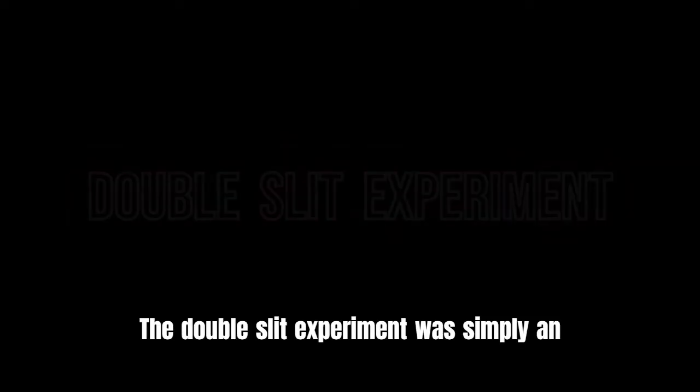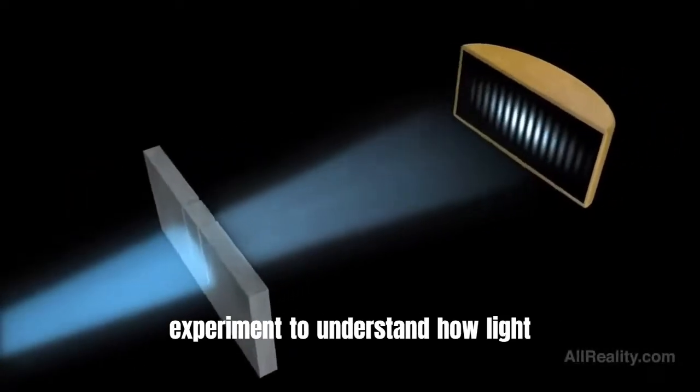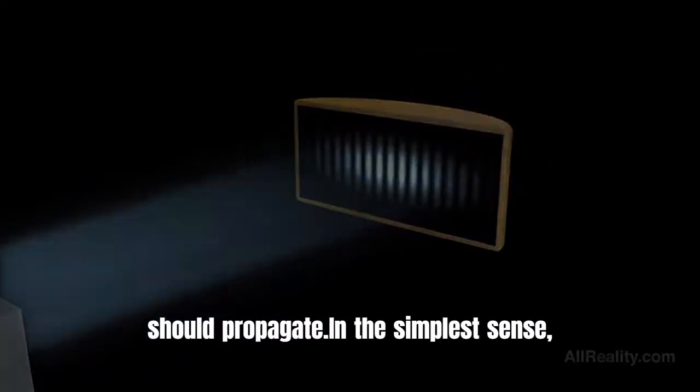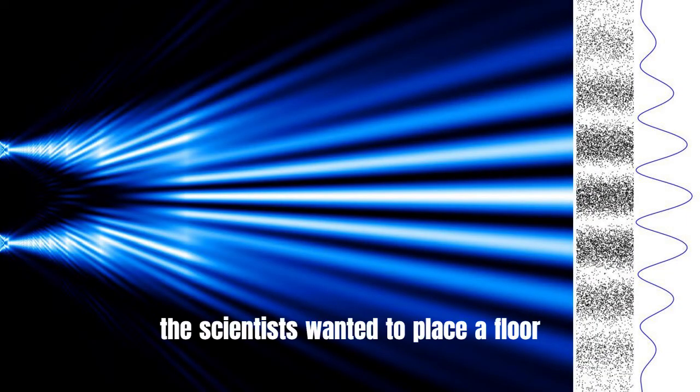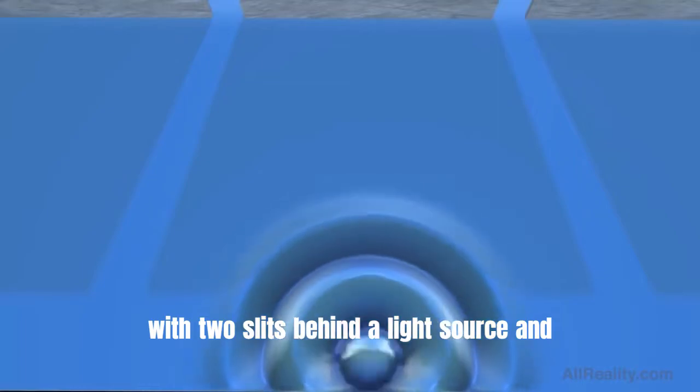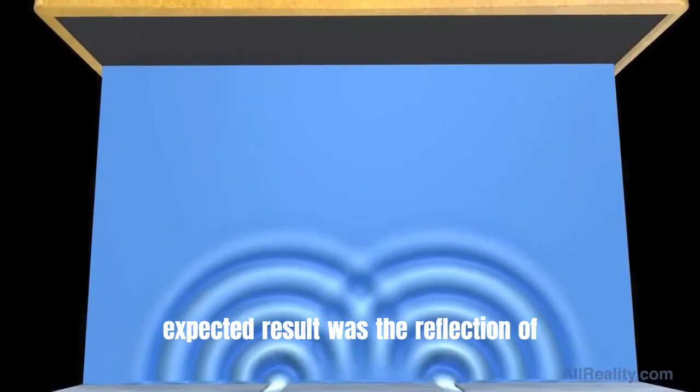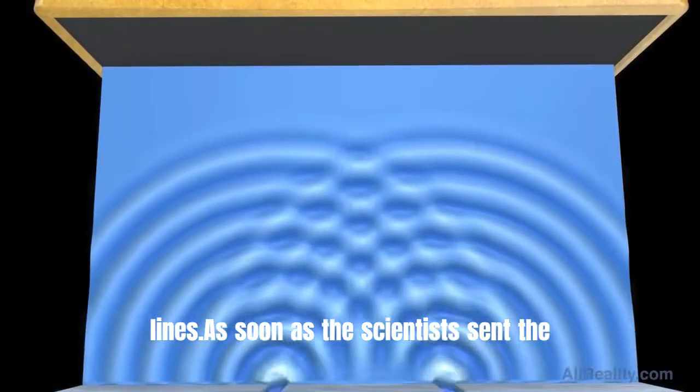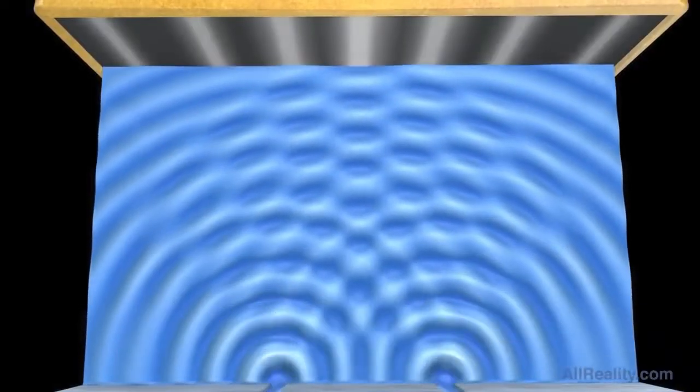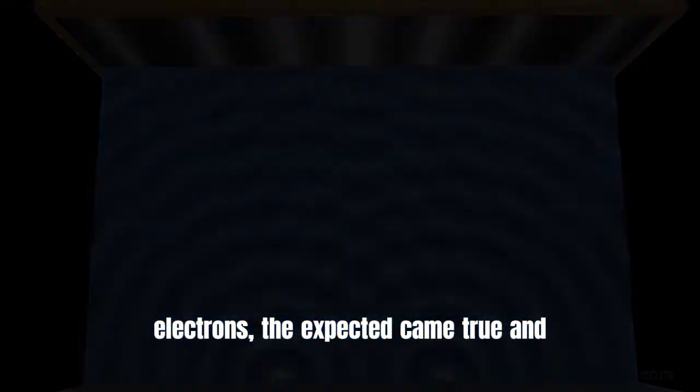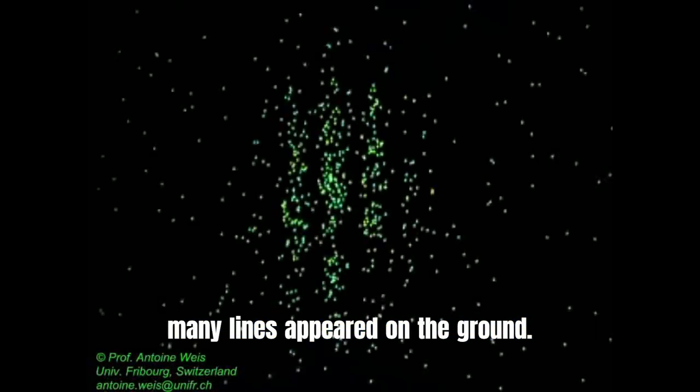The double-slit experiment was simply an experiment to understand how light propagates. In the simplest sense, the scientists wanted to place a barrier with two slits behind a light source and see the behavior of the light. The expected result was the reflection of the light on the background in many lines. As soon as the scientists sent the electrons, the expected came true and many lines appeared on the screen.